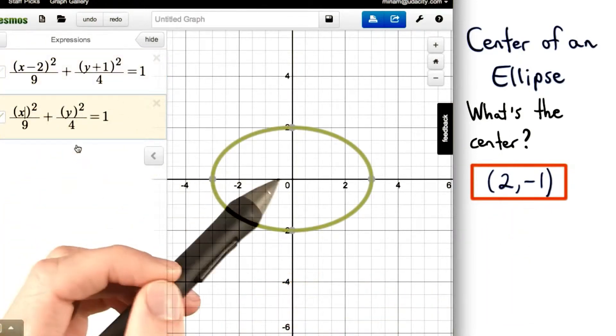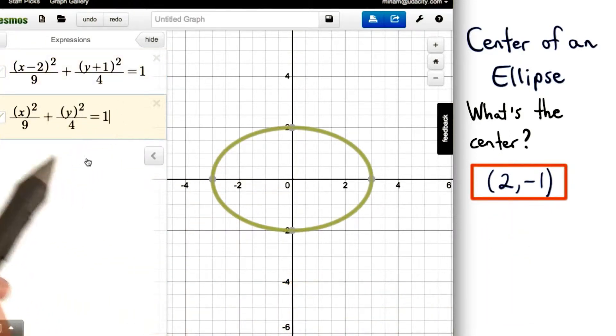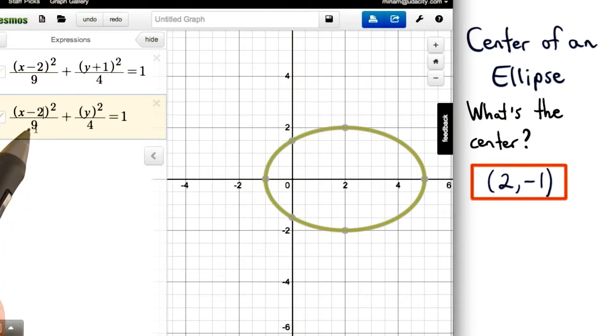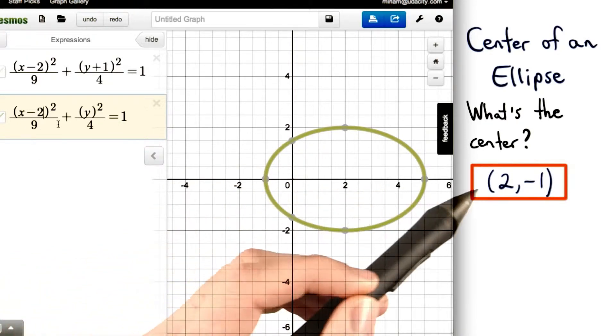This would be the basic ellipse centered at the origin. So first we want to subtract 2 from x. And remember, subtracting 2 moves the ellipse to the right, 2 units.